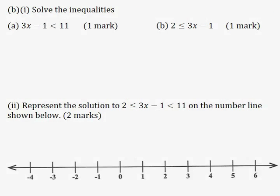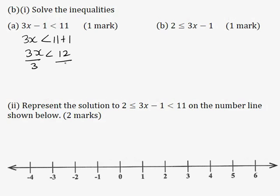Part B, part 1: Solve the inequality 3x minus 1 less than 11 for one mark. I'll take minus 1 across the inequality sign — it becomes positive — so 3x is less than 11 plus 1, which is 12. Dividing both sides by 3, x is less than 4.